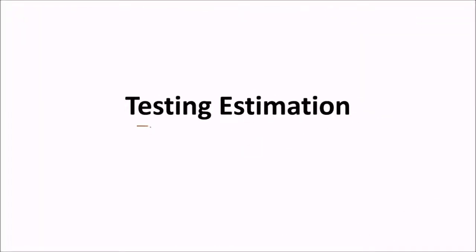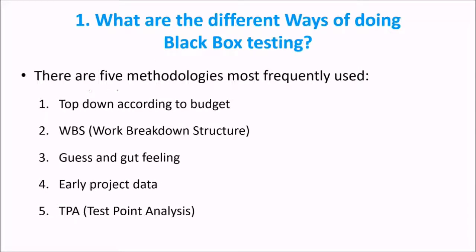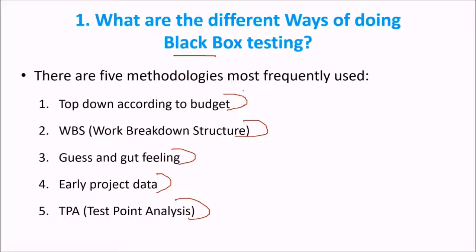Now let us take some questions on testing estimation. What are the different ways of doing black box testing? There are various methods generally used: top-down according to the budget, work breakdown structure, guess and gut feeling, early project data, and test point analysis.